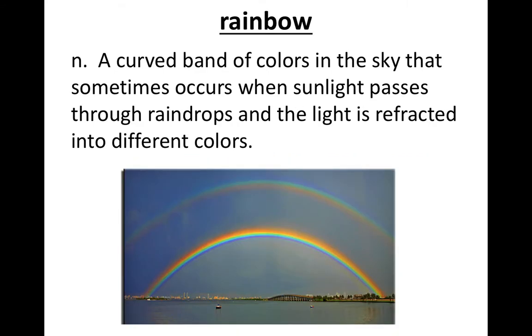Rainbow – a curved band of colors in the sky that sometimes occurs when sunlight passes through raindrops and the light is refracted into different colors.